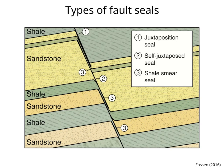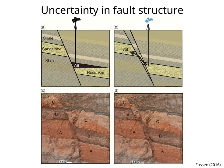This lecture is about juxtaposition seals. Before we start, it is important to remember the uncertainty in fault structure, especially on seismic data. This has important implications for the interpreted juxtaposition of rock units across the fault. The main point is that both fault structure and fault juxtaposition have uncertainty.